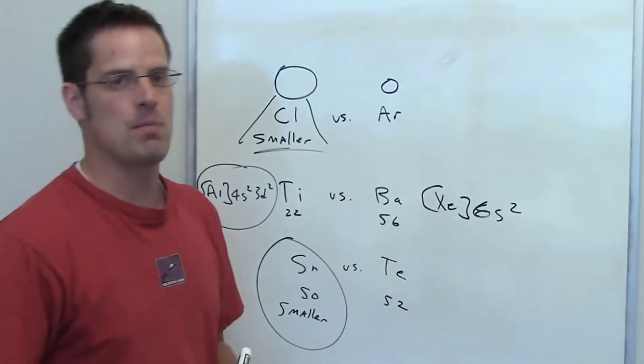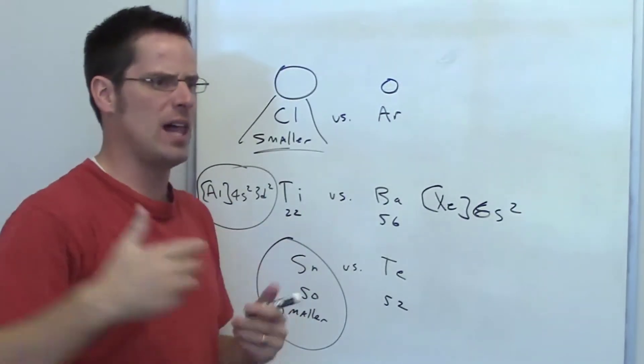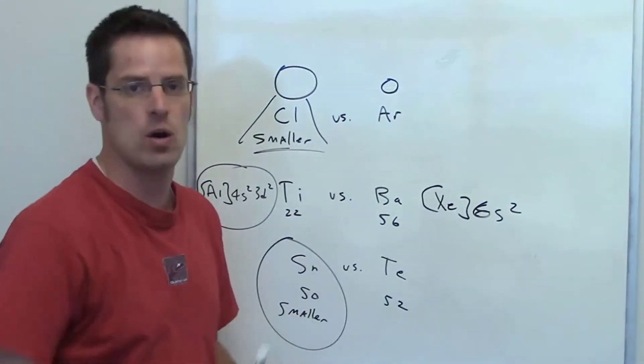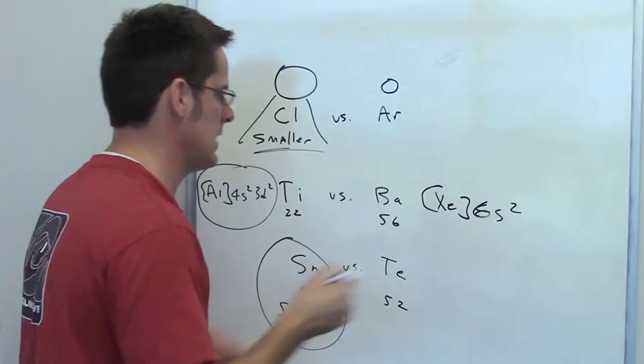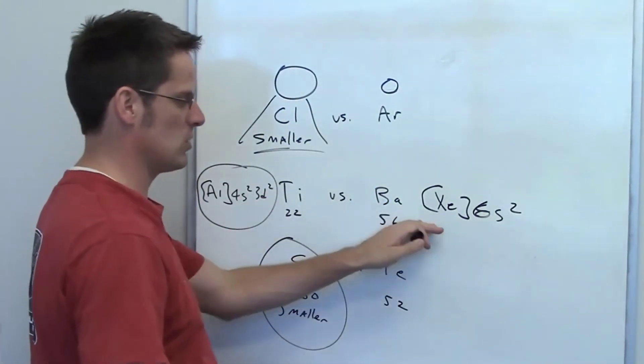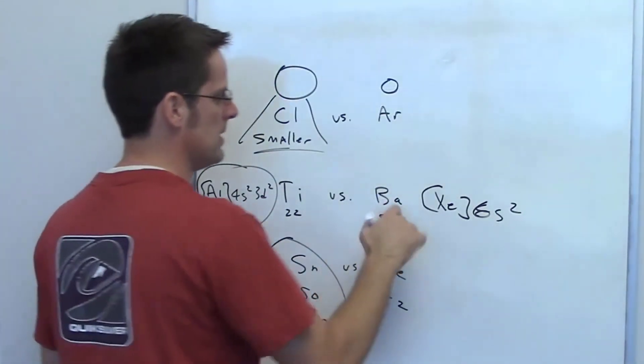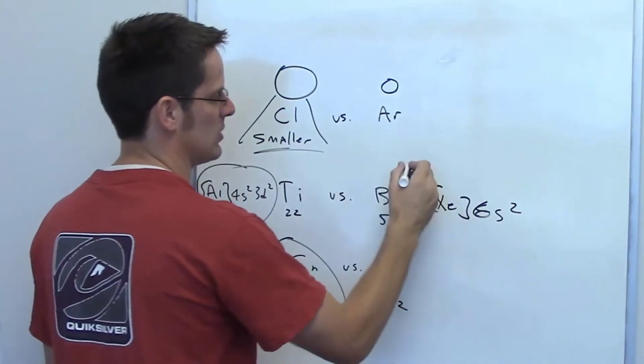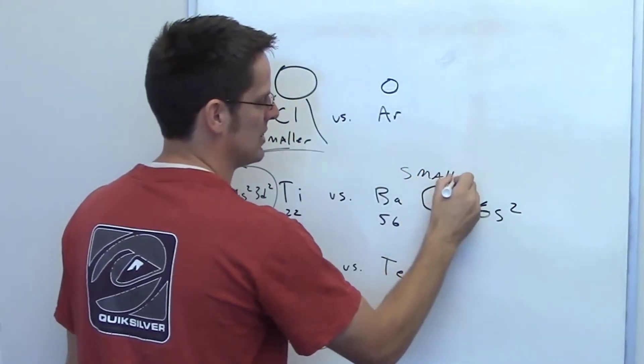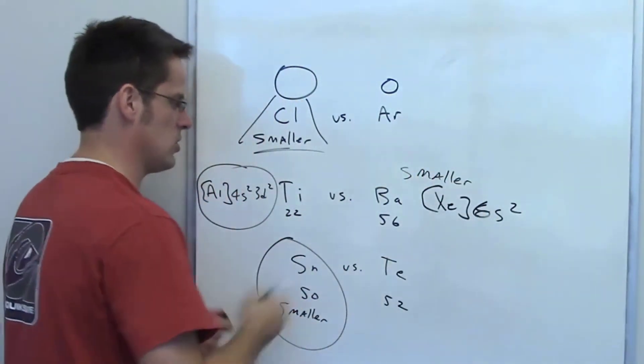And that goes back to what I've taught you in the past, that the size of an element increases as you go down a column on the periodic table. Even though these are in different columns, this one is way further down than titanium. Therefore, it's much easier to remove this electron, so this element, barium, is going to have the smaller first ionization energy.